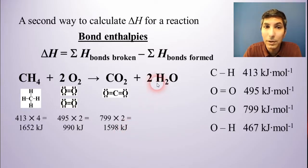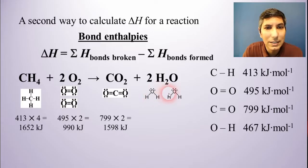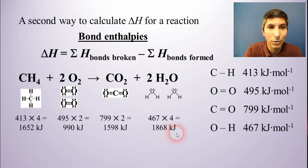Next, we have water, but notice we have two water molecules. So I'm going to draw two water molecules here. And you'll notice that we have oxygen-hydrogen single bonds. That's all we have here, but we have four of them. So we're going to have to multiply the four by its bond enthalpy, which is 467 kilojoules per mole. So when I multiply that out, I get 1,868 kilojoules.